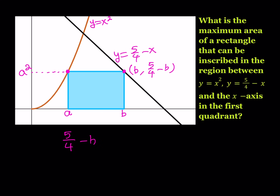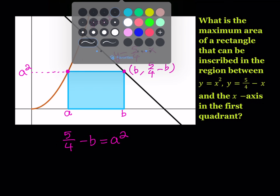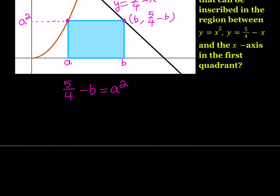So 5 fourths minus b is equal to a squared — we're going to be using that information in our calculations. Now let's go ahead and write the area of this rectangle. Since we're trying to maximize the area, it makes sense to write the expression for the area. Let's call the area capital A, and I can write it as base times height.